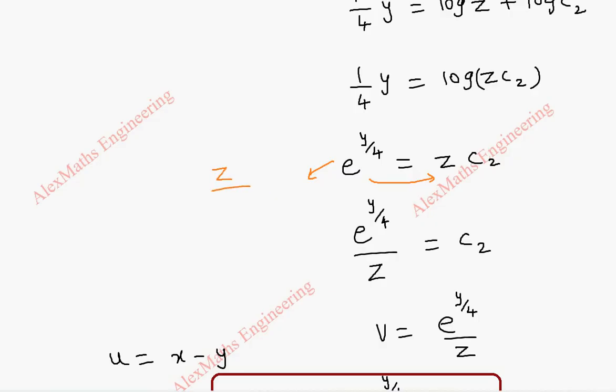So we get z by e power y by 4, and c2 will come to the other side as 1 by c2. So as I told you, the constant can be positive, negative, or multiple of something. So here 1 by the constant is also a constant.